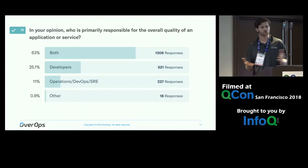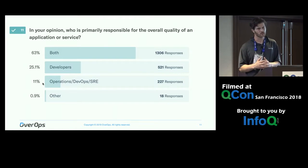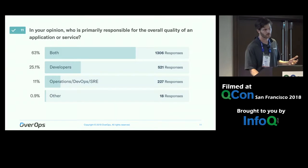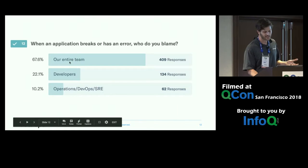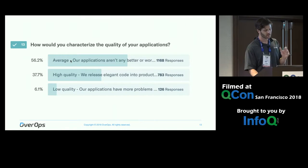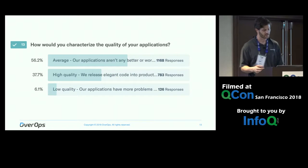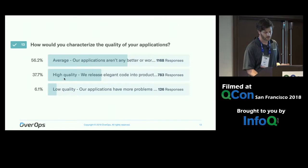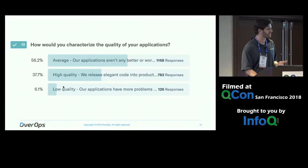When I ask people who's primarily responsible for overall quality, people say it's really dev and really ops and it's both. It's interesting that nobody says ops is responsible solely. Developers actually have to take a lot of accountability and ownership. Nobody ever blames ops and DevOps and the SREs — it's really the developer, the entire team, that gets most of the flack. Most people characterize their application quality as average, some say low, some say it's awesome.